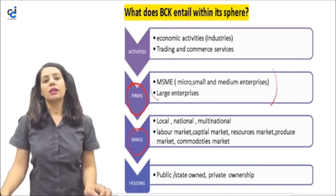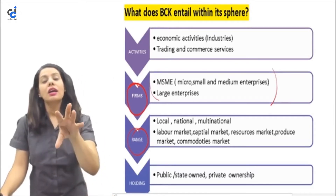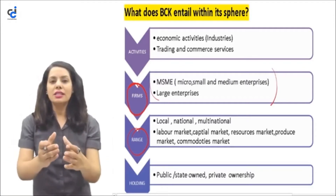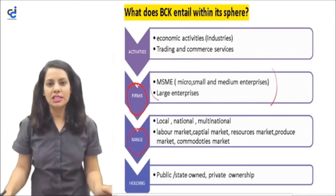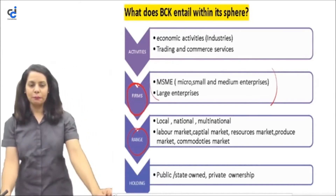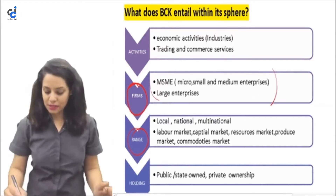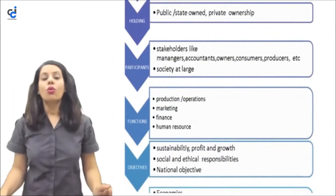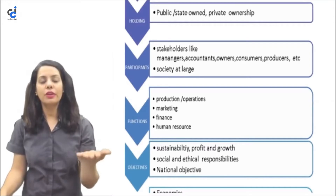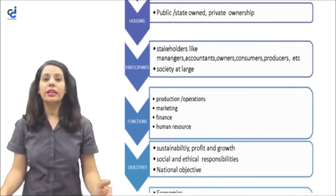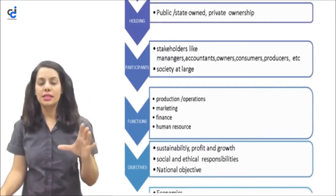BCK also covers all types of markets — whether they are labour markets, product markets, or financial markets — because trade happens at local, national, and international levels across all sorts of markets, wherever exchange of goods and services occurs. Regarding ownership, businesses can be privately owned or owned by the government — state-owned or public-owned. All enterprises, whether privately or state owned, fall within BCK's domain.